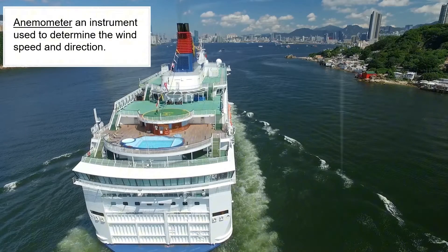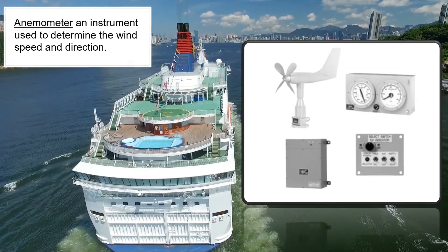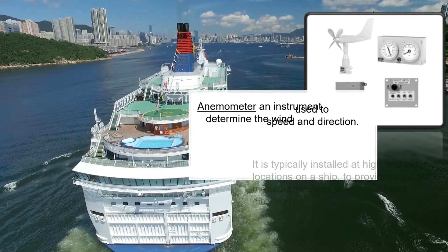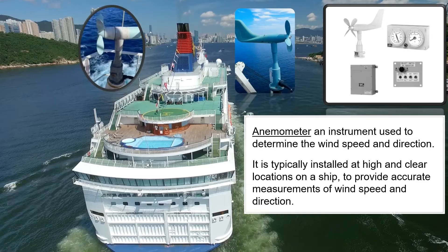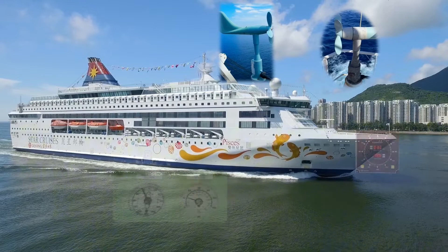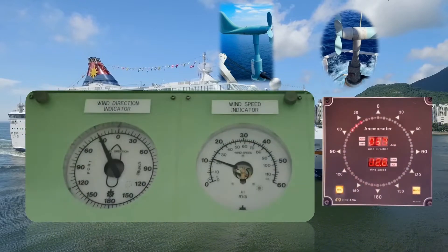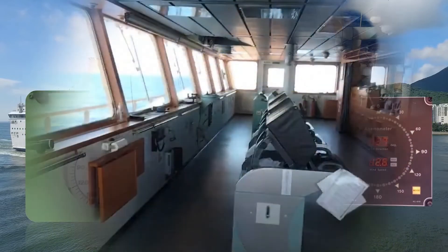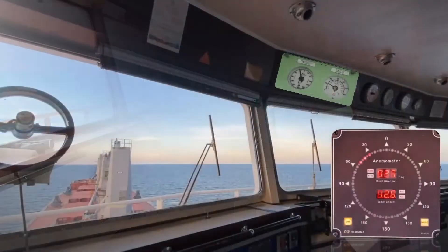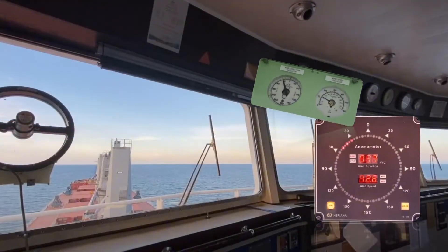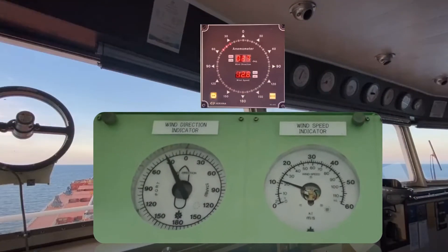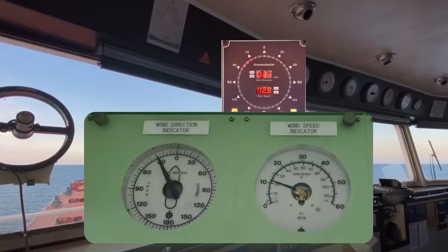On board we have an instrument used to determine the wind speed and direction called an anemometer. It is typically installed at high and clear locations on a ship to provide accurate measurements. Most high-mounted anemometers will have data displayed on a unit accessible from the ship's bridge, which can be digital or analog type, commonly called a wind direction and speed indicator.